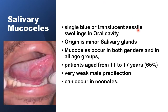These mucoceles originate from minor salivary glands and usually form a single blue or translucent sessile dome-shaped swelling in the oral cavity. They can occur in both genders almost equally and can affect any age group, but patients aged between 11 and 17 form about two-thirds of patients with this type of lesion. It has a very weak male predilection and can occur even in neonates.